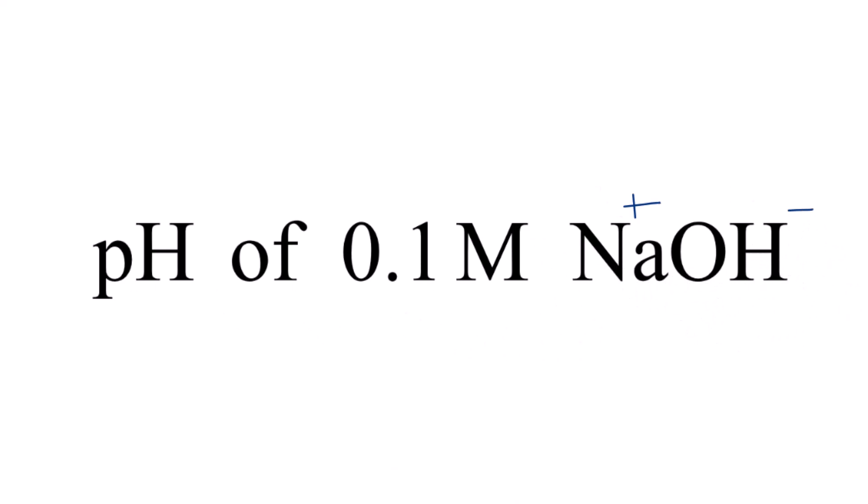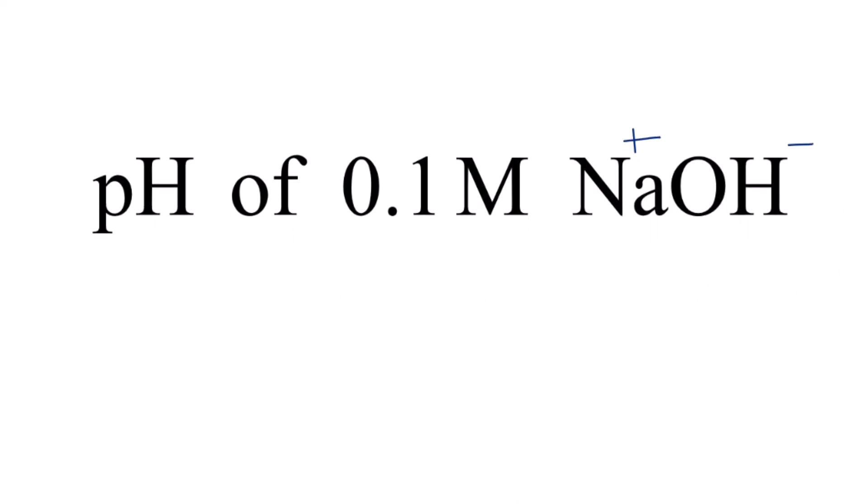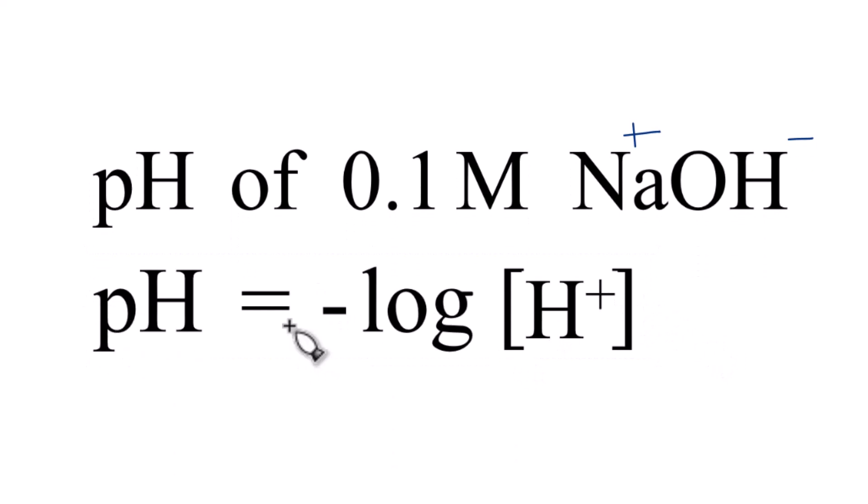So when we go to find the pH, you might try to use this formula here, where we take the negative log of the concentration of the hydrogen ion. That's the H in pH. But we don't have H plus here. We have Na plus, and we have OH minus. So we can't use this formula here. We have to use a slightly different formula.